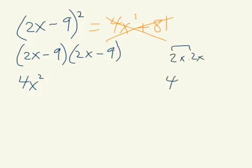2 times 2 is indeed 4. x times x is x squared. That's where that comes from. Outside, minus 18x.